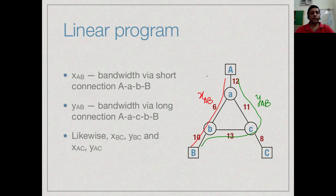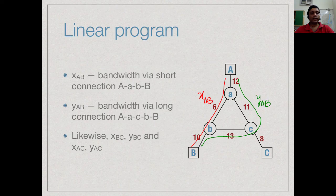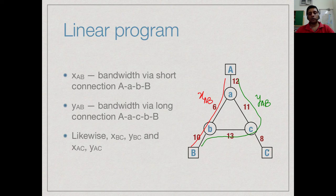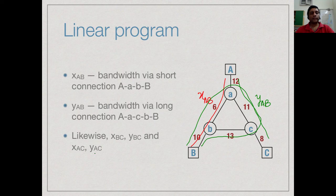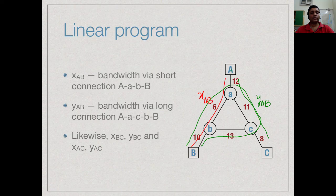We have two variables associated with the A to B service that we are going to provide: how much goes directly x_AB, how much goes indirectly y_AB. Similarly, between B and C we will have x_BC which goes through the short route and y_BC which goes via the long route and same way for x_AC and y_AC. So, we have these six variables describing the different ways of connecting pairs of customers.